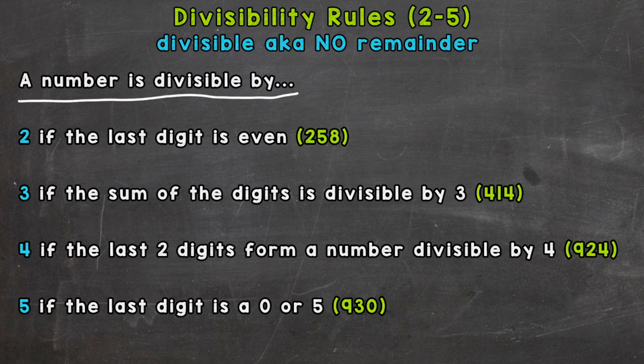A number is divisible by 2 if the last digit is even. So for example, we have 258 here. The last digit is an even number, that makes 258 an even number. Therefore, it's divisible by 2. We know that we could do 258 divided by 2 and there won't be a remainder. A counter example would be 259 — that ends in an odd number, so we automatically know that 259 is not divisible by 2.